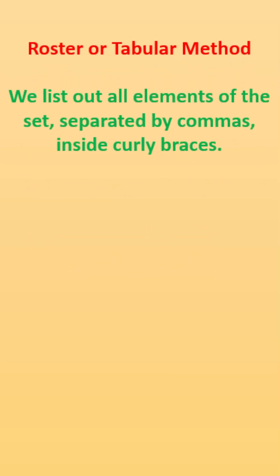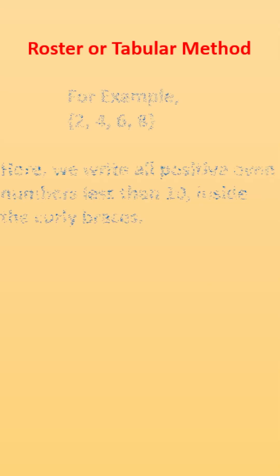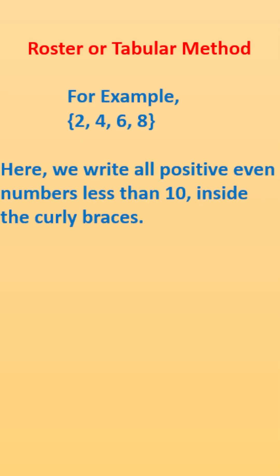In the Roster method, we list out all elements of the set, separated by commas inside curly braces. For example, {2, 4, 6, 8}. Here we write all positive even numbers less than 10 inside the curly braces.